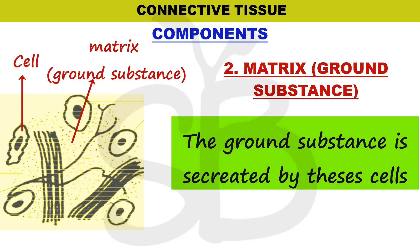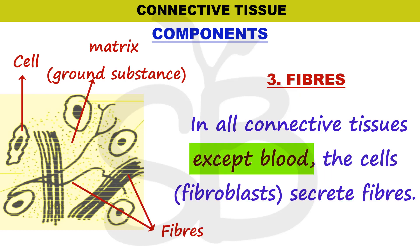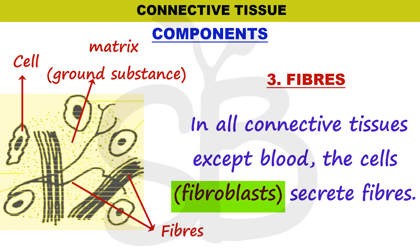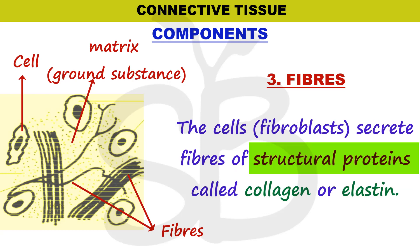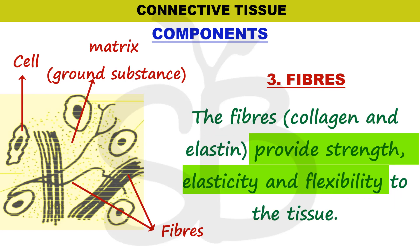This semi-fluid ground substance is called the matrix, and it has different components — different proteins and carbohydrates. There are also fibers. Fibroblast cells produce structural protein fibers. These fibers are collagen and elastin. Collagen and elastin fibers give connective tissues their strength, elasticity, and flexibility.